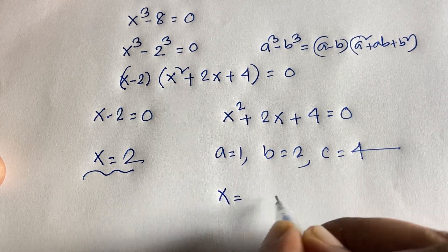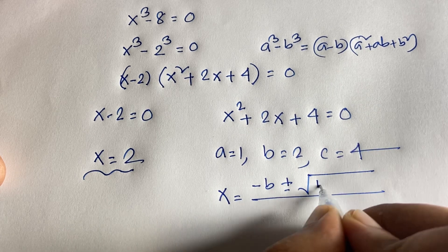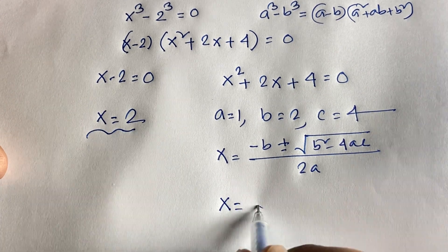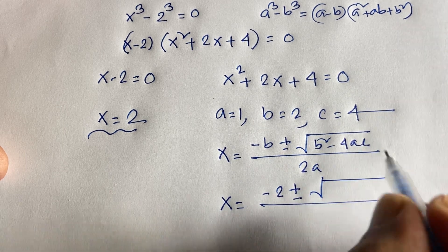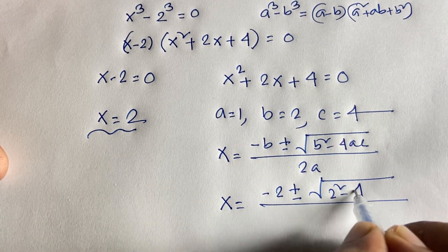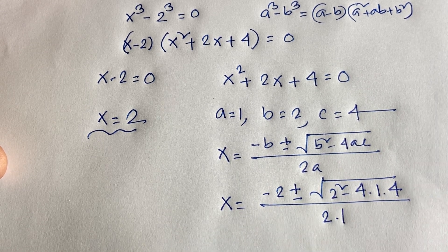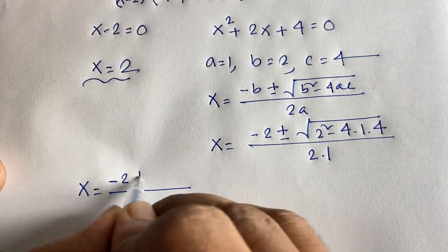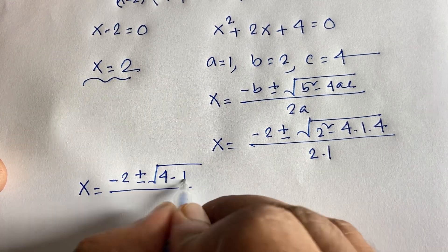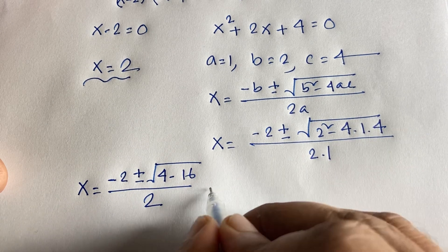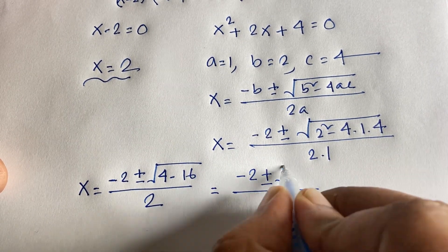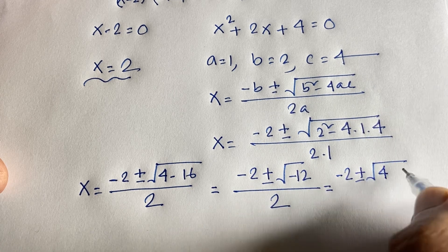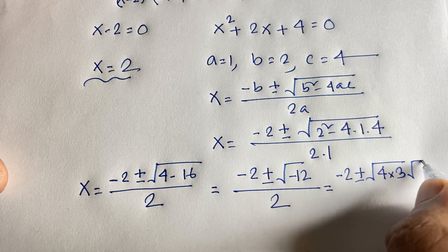We know that x equals minus b plus or minus square root of b squared minus 4ac, all over 2a. According to this formula, x equals minus 2 plus or minus square root of b squared, which is 2 squared, minus 4 times 1 times 4, over 2 times 1. That gives us minus 2 plus or minus square root of 4 minus 16 over 2, which is minus 2 plus or minus square root of minus 12 over 2.